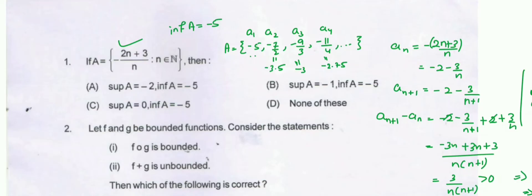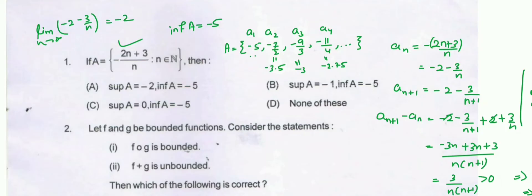Since we have an increasing sequence, we take the limit as n tends to infinity of aₙ = minus 2 minus 3/n, which gives minus 2. So the supremum of a is minus 2. Option A is the correct option.